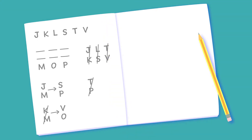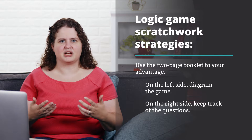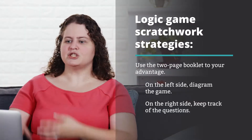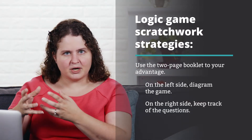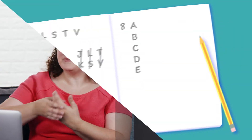On the second page, that's where you want to work through each of your individual questions. Label them very carefully, because there's a good chance you're going to want to go back and review some of these questions, and you don't want to waste time figuring out what diagram goes with what question number. Label your question numbers, label your answers so you can easily eliminate, and diagram all of your conditionals out on that second page.